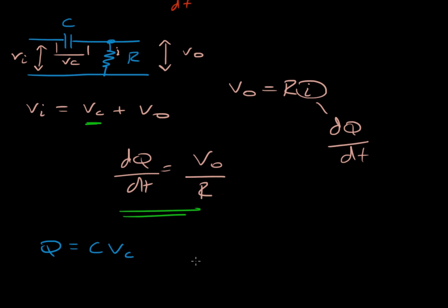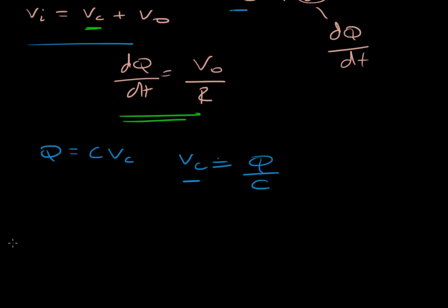So I'm going to rearrange that so that Vc equals Q divided by C. So now I'm going to substitute this one, this term, and this term into this equation. So let me do that. So Vi equals Vc, which is this term here, Q over C, plus V0, which is this term here, and I'll just write it out as R dQ/dt.